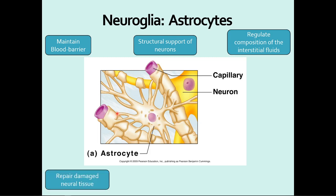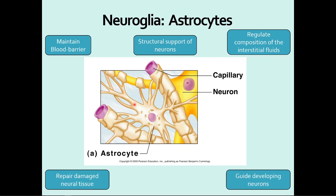Astrocytes do help with some repair within the central nervous system — your brain and spinal cord repair a little bit. The problem is that if we damage it on any significant level, it's hard to recover from that.